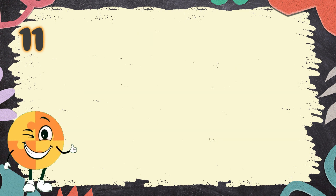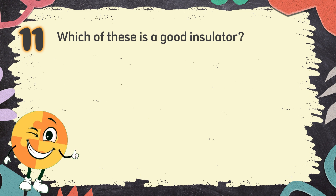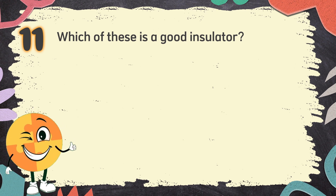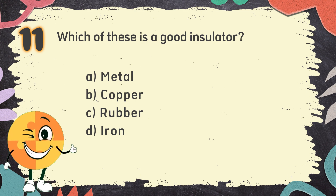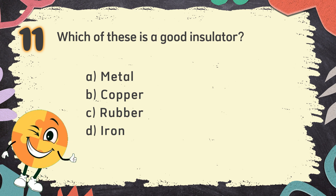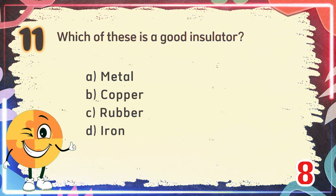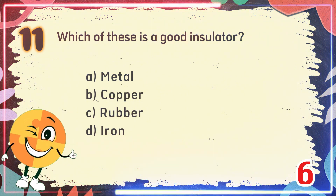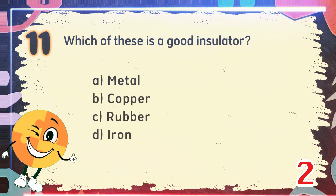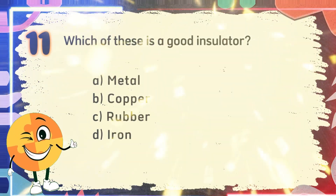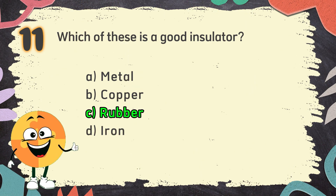Number 11. Which of these is a good insulator? The choices are: A. Metal, B. Copper, C. Rubber, D. Iron. The correct answer is C. Rubber.